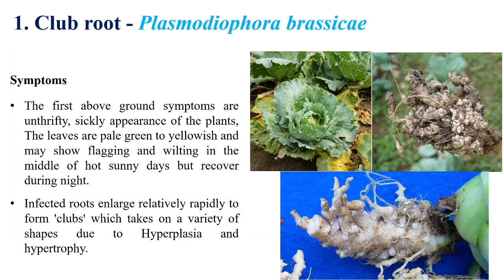The first disease is club root, sometimes also called club rot, caused by Plasmodiophora brassicae. The name itself indicates that the roots produce club-like or bulged symptoms. This is mainly due to hypertrophy and hyperplasia.